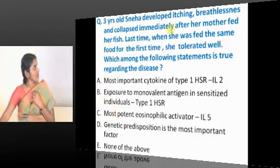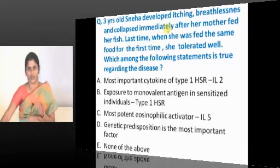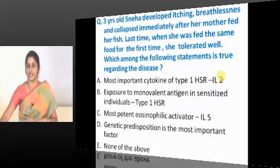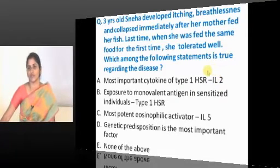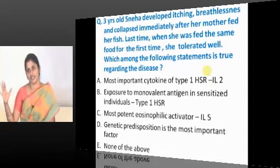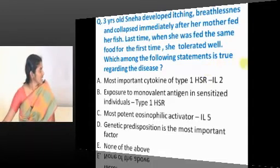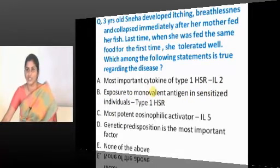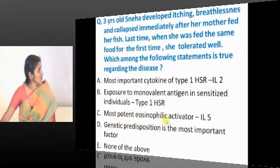This particular patient has got Type 1 hypersensitivity reaction. The following is incorrect: most important cytokine Type 1 hypersensitivity reaction is IL-2. IL-2 belongs to IL-2, 12, interferon gamma for Th1 response. Here the answer should be IL-4. Exposure to monovalent antigen is incorrect, Type 1 is polyvalent. Most potent eosinophilic activating is IL-5? Yes.